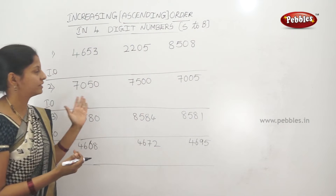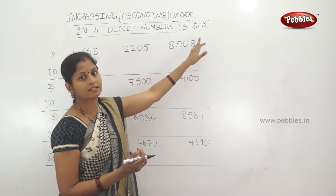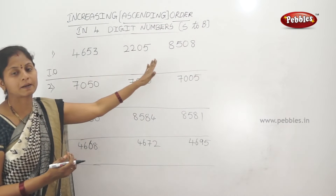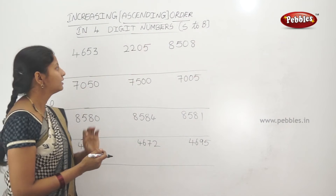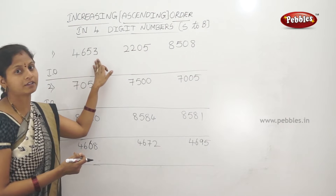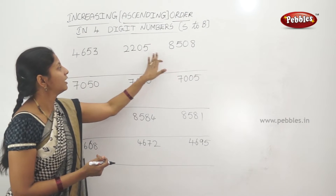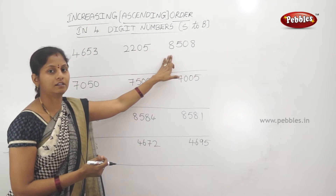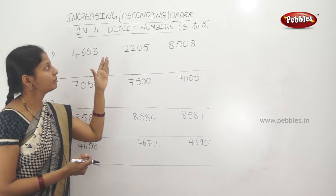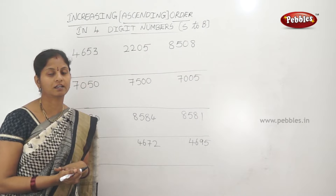Here we have 4-digit numbers. We will take the smallest and biggest among them. The numbers are: 4,653 — 2,205 — 8,508. We will arrange these 4-digit numbers in ascending order, that is, increasing order.